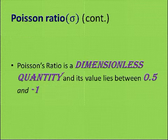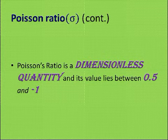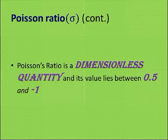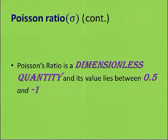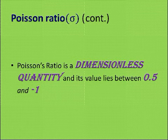Poisson's ratio is a dimensionless quantity because the units of radius and length cancel out. This is a very important MCQ point — the dimension of Poisson's ratio is dimensionless. The value of Poisson's ratio ranges between minus 1 and 0.5. You can see the derivation of the range of Poisson's ratio in the next video.